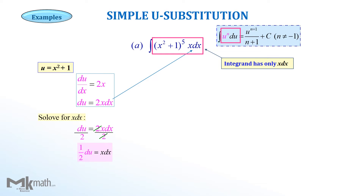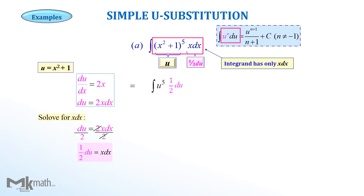Now we transform the original question in terms of u and du. Since x squared plus 1 is u and the x dx part is one-half du, the integrand is now u to the fifth power times one-half du. Since one-half is a constant, we pull it out from the integral. The problem becomes one-half times the integral of u to the fifth power du.